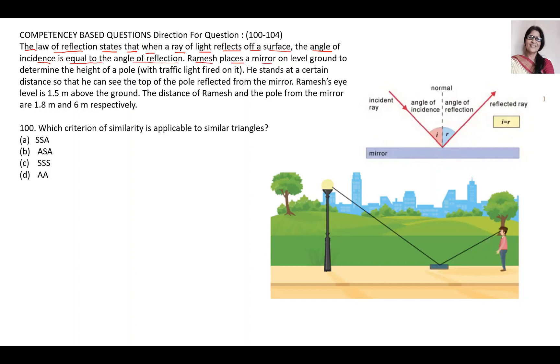Ramesh places a mirror on ground to determine the height of the pole with traffic light fixed on it. He stands at a certain distance so that he can see the top of the pole reflected from the mirror. Ramesh's eye level is 1.5 m above the ground. The distance of Ramesh and the pole is 1.8 m and 6 m respectively.